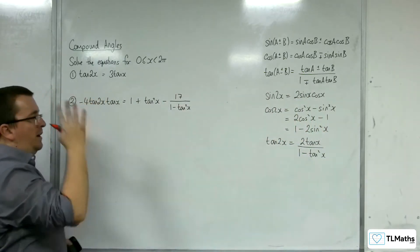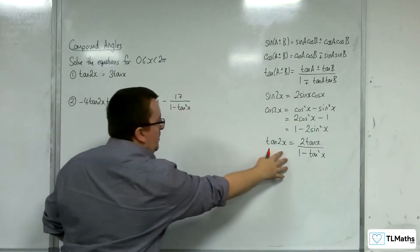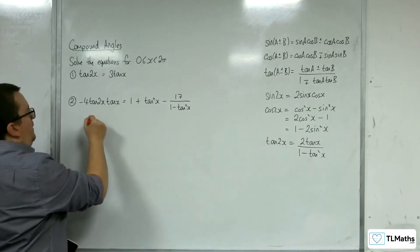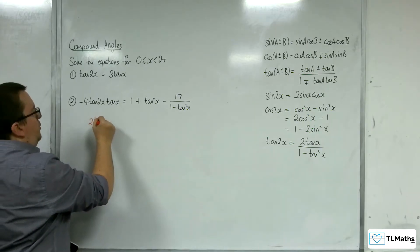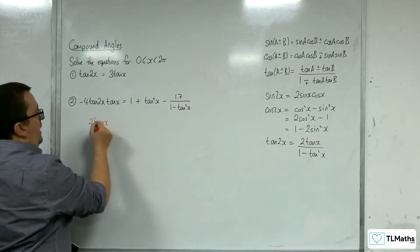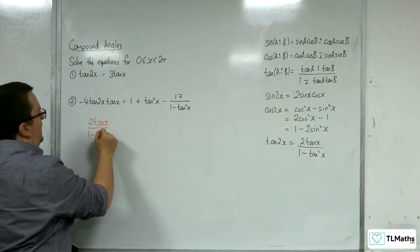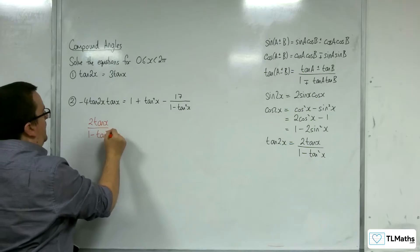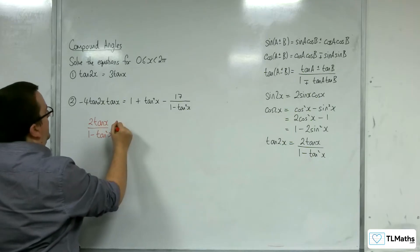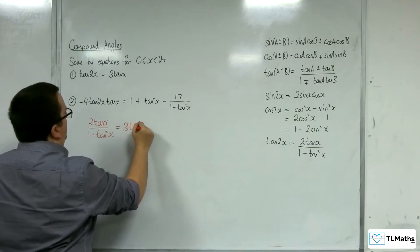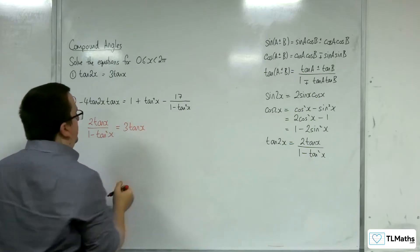Now for tan 2x, we can go directly to the double angle formula and replace it with 2 tan x over 1 minus tan squared x. And we've got the 3 tan x on the right hand side.